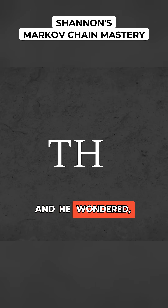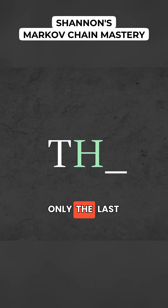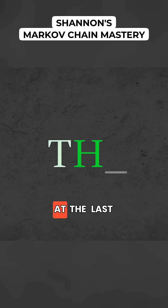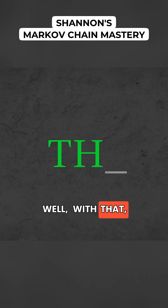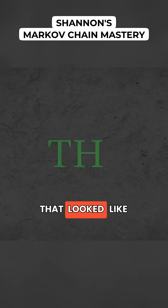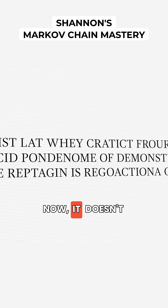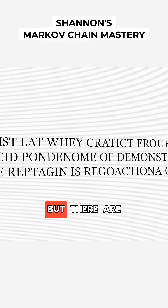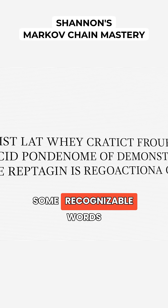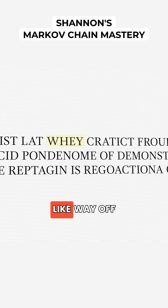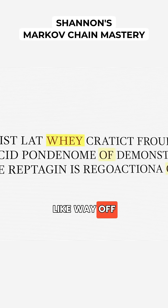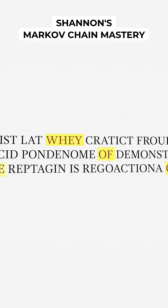And he wondered, what if instead of looking at only the last letter as a predictor, I look at the last two? With that, he got texts that look like this. Now, it doesn't make much sense, but there are some recognizable words, like 'way,' 'off,' and 'the.'